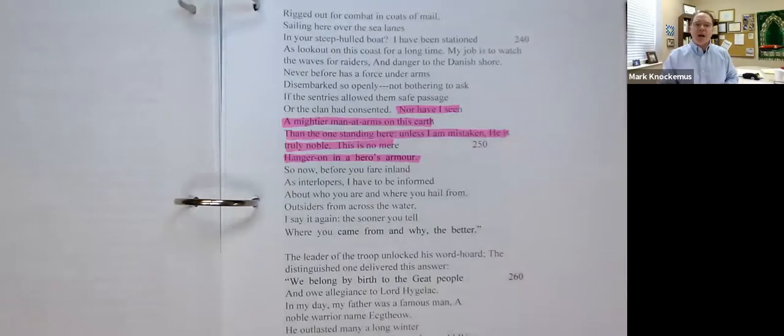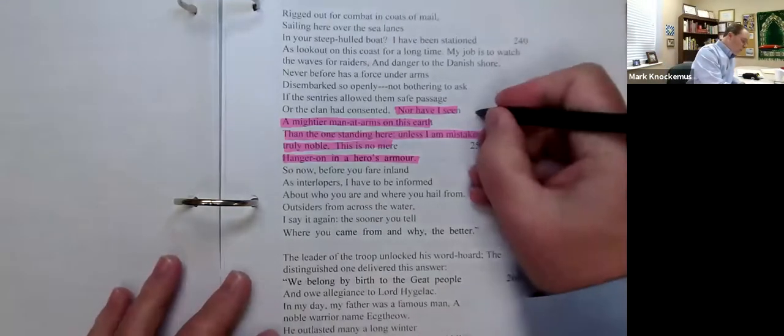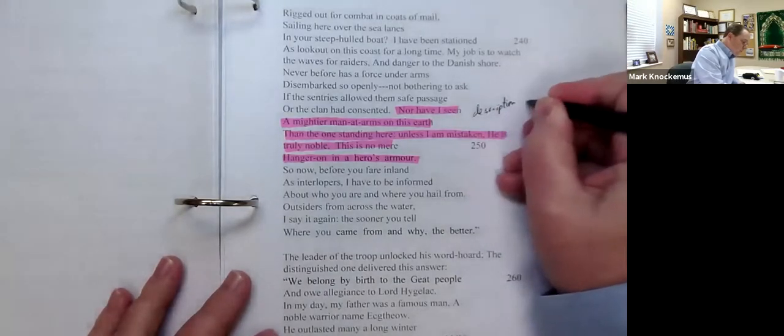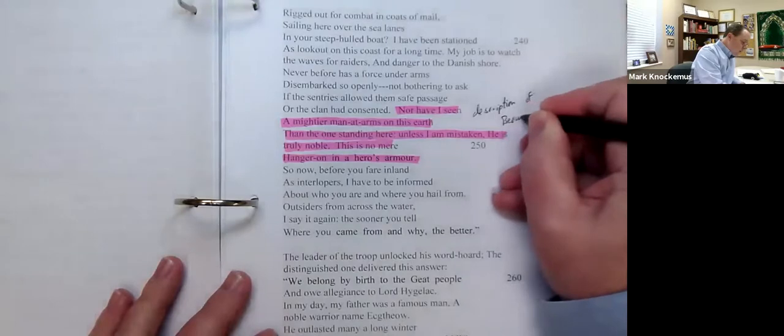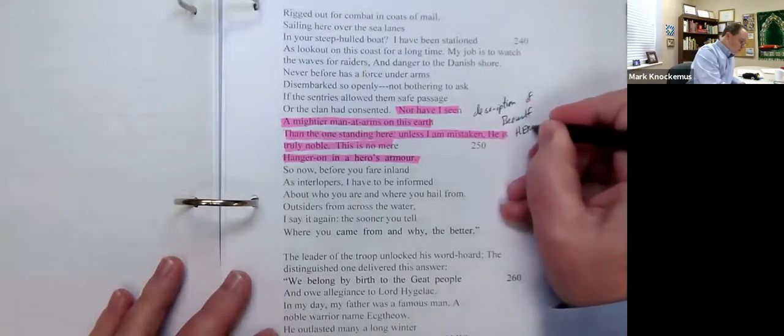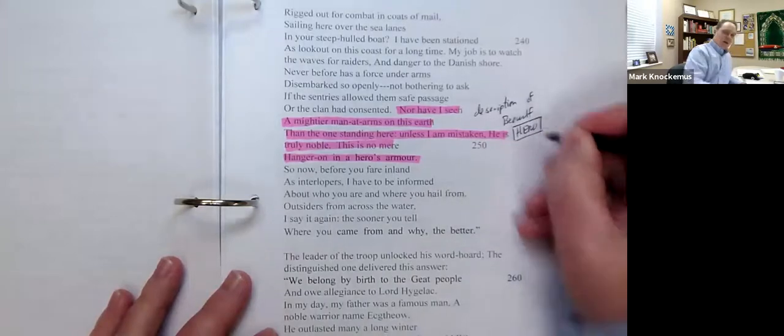Nor have I seen a mightier man at arms on this earth than the one standing here. Unless I am mistaken, he is truly noble. There is no, this is no mere hanger on in a hero's armor. All right, so what do we see here? This is a description, of course, of Beowulf. He is our hero.